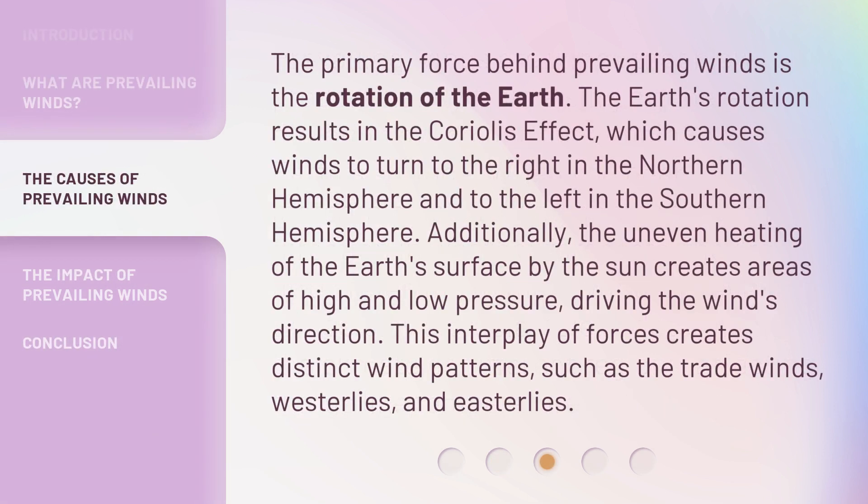The primary force behind prevailing winds is the rotation of the Earth. The Earth's rotation results in the Coriolis effect, which causes winds to turn to the right in the Northern Hemisphere and to the left in the Southern Hemisphere. Additionally, the uneven heating of the Earth's surface by the Sun creates areas of high and low pressure, driving the wind's direction. This interplay of forces creates distinct wind patterns, such as the trade winds, westerlies, and easterlies.